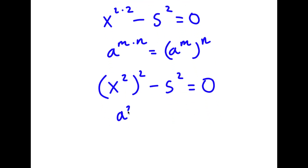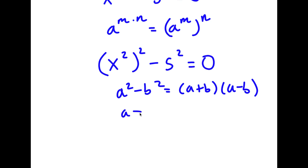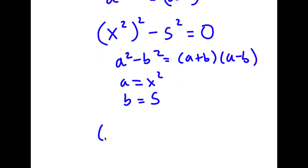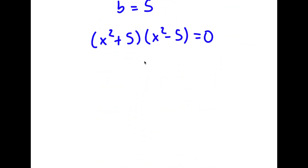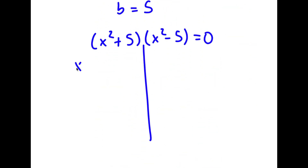Using the difference of squares formula — a squared minus b squared equals a plus b times a minus b — where a is x squared and b is 5, I get x squared plus 5 times x squared minus 5 equals 0. This gives me two equations: x squared plus 5 equals 0, and x squared minus 5 equals 0.